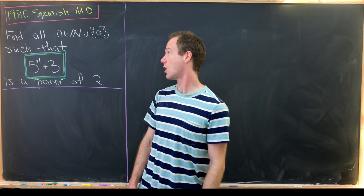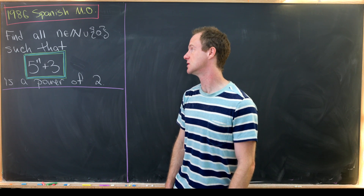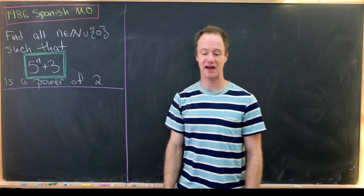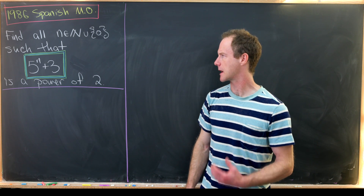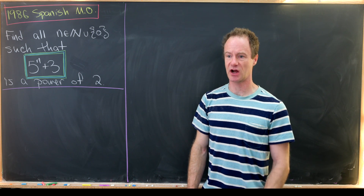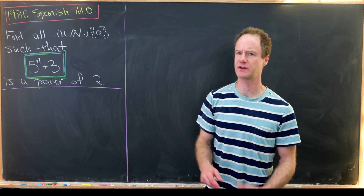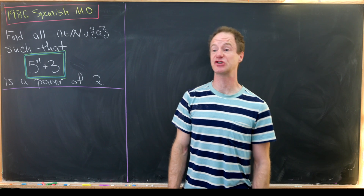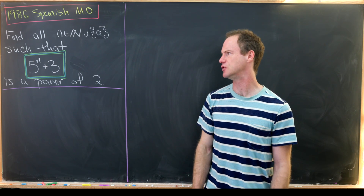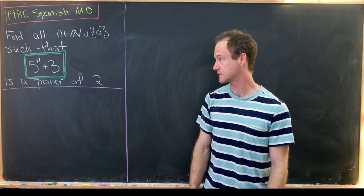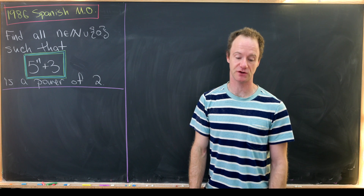Our goal is to find all natural numbers, including zero — so really non-negative integers — that we'll call n, such that five to the n plus three is a power of two. Usually when you're trying to find a problem like this, there's either an infinite family or more likely only a couple of small examples. You find those small examples and then prove there aren't any more.